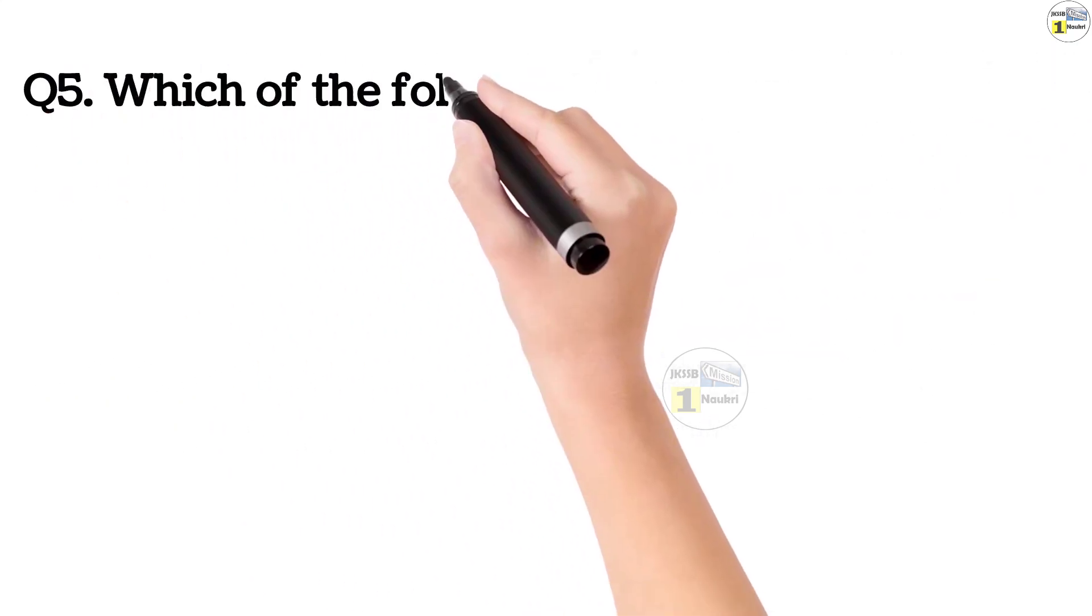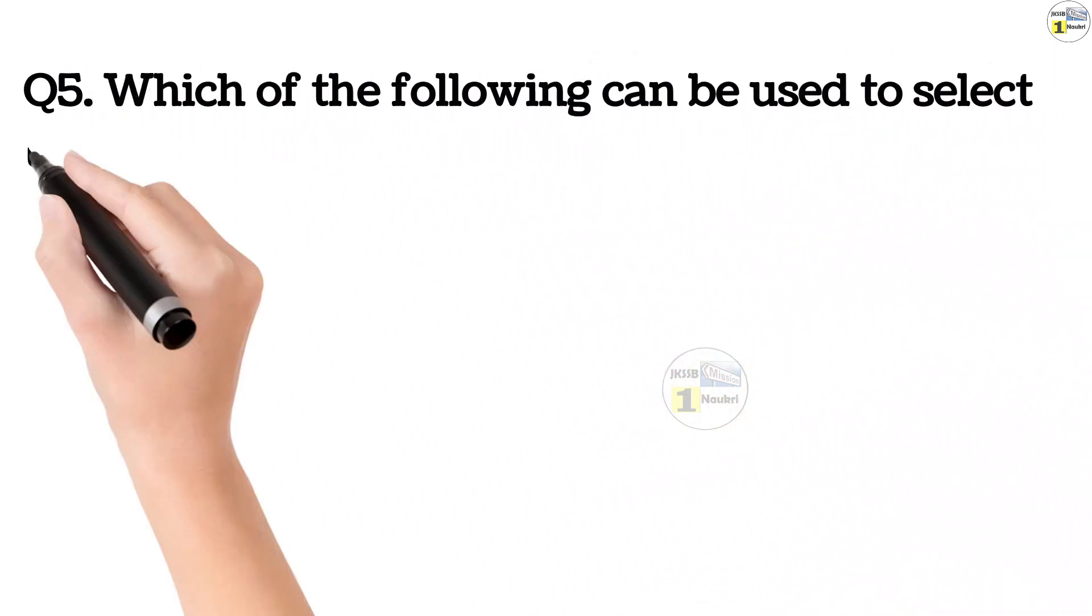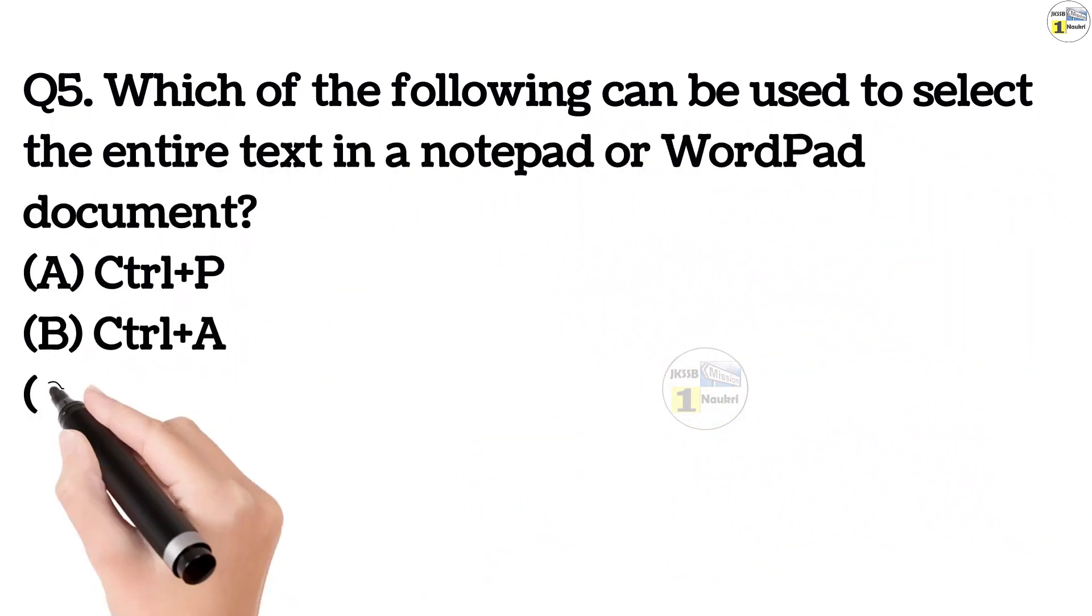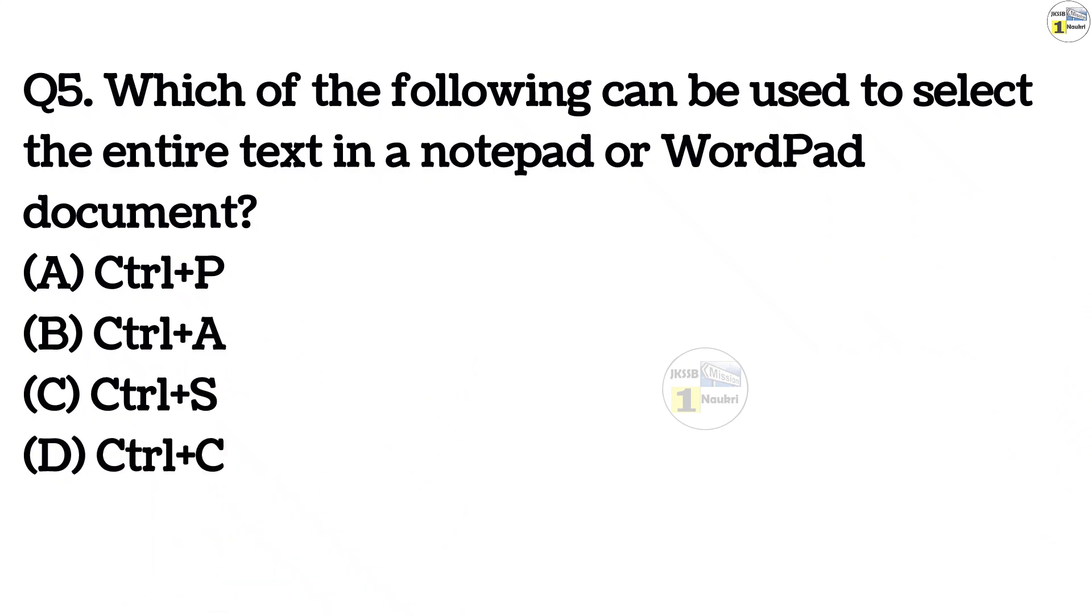Question number 5. Which of the following can be used to select the entire text in a notepad or wordpad document? Option A, Ctrl plus P. Option B, Ctrl plus A. Option C, Ctrl plus S. Option D, Ctrl plus C.